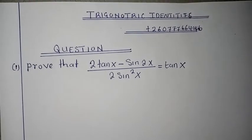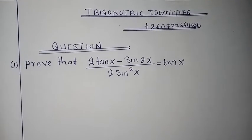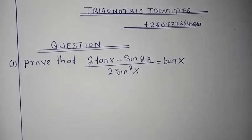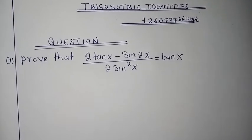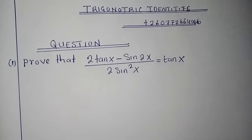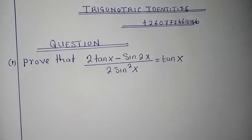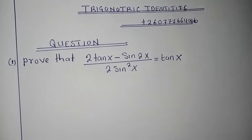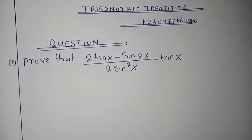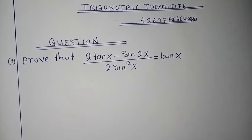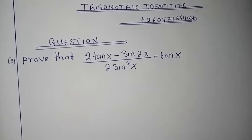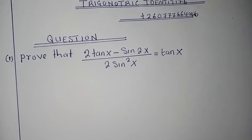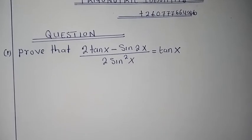Hello, good afternoon everyone. Welcome back to my YouTube channel. Presenting before you this wonderful tutorial is Hamper Kleman, your mentor. We have a very interesting question on trigonometric identities, and we have been asked to prove that two tan x minus sine two x, all over two sine squared x, is equal to tan x. Let's get started.